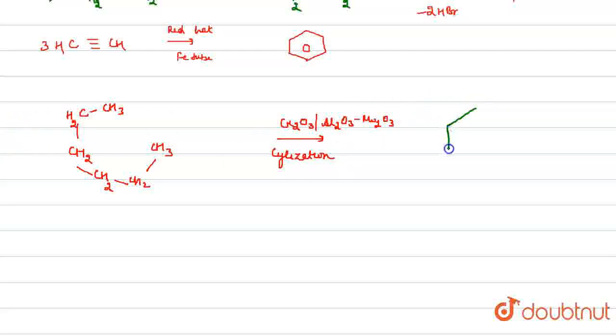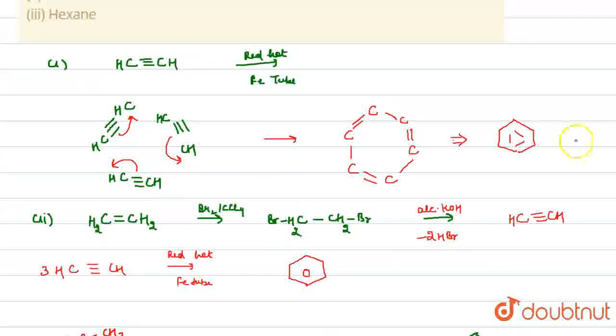Now, we have to convert this cyclohexane into benzene. Then, we will remove 3 hydrogens from here. Thus, formation of a benzene ring takes place. So, I hope you understand this concept. Thank you very much.